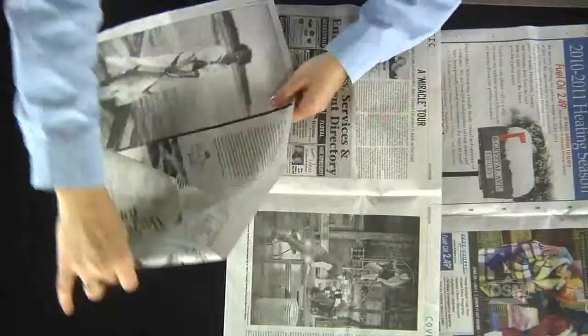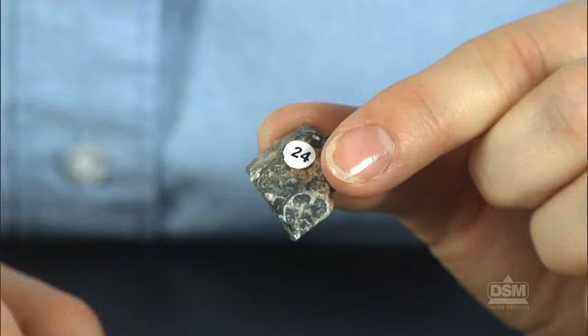Next, divide the class into groups of four and have the students cover their work areas with newspaper. Distribute one bag of rock and mineral specimens and two magnifiers to each group. Make sure students do not remove the small round labels on each specimen as these labels are used to identify the specimens.